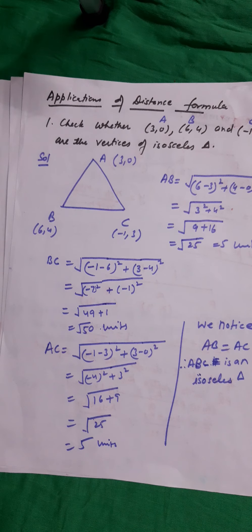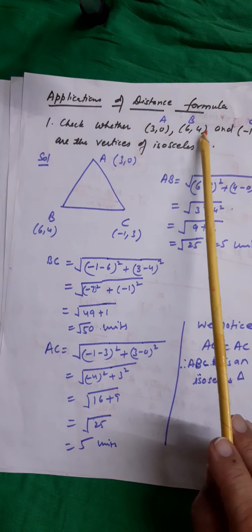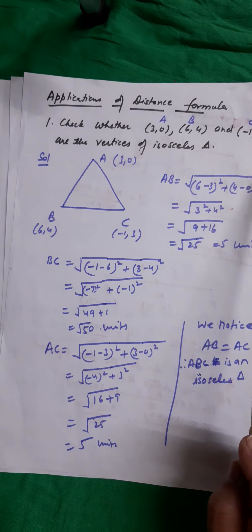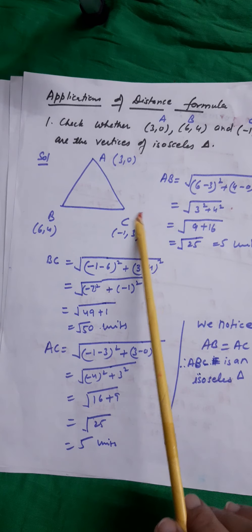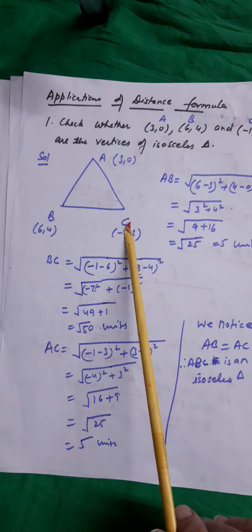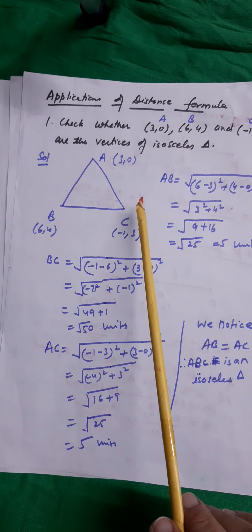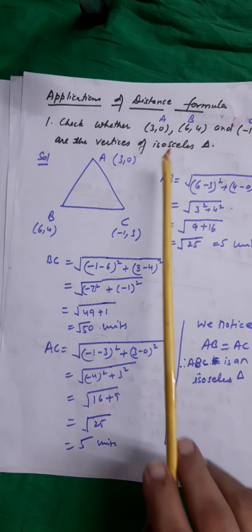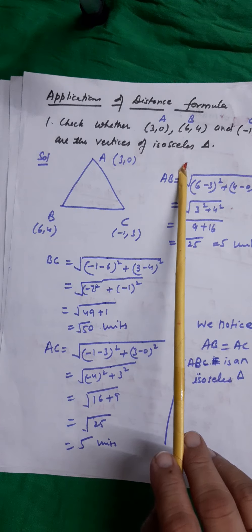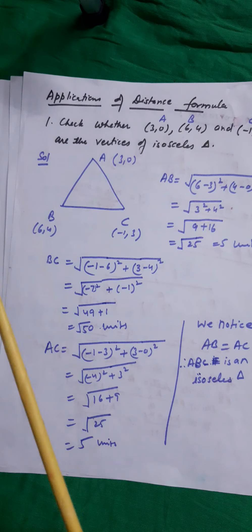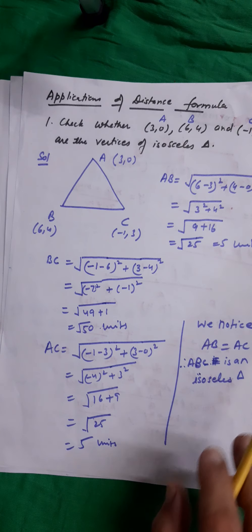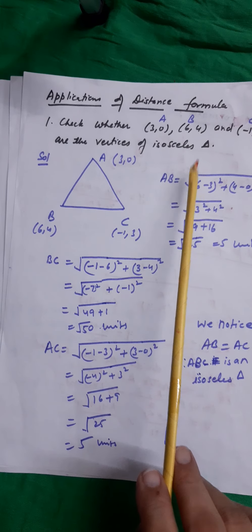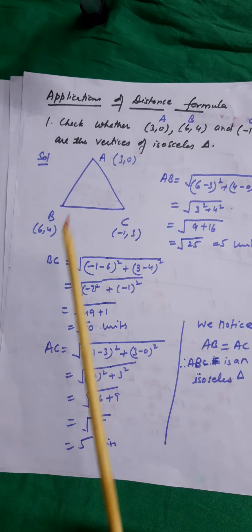One more example of distance formula: check whether (3,0), (6,4), and (−1,3) are vertices of an isosceles triangle. For this we need the definition of an isosceles triangle — it is a triangle whose at least two sides are equal. Note that an equilateral triangle is also an isosceles triangle. Here it is sufficient to show that two sides are equal.